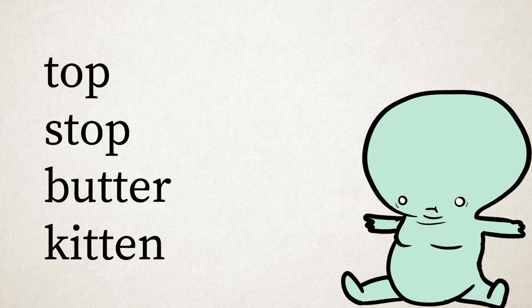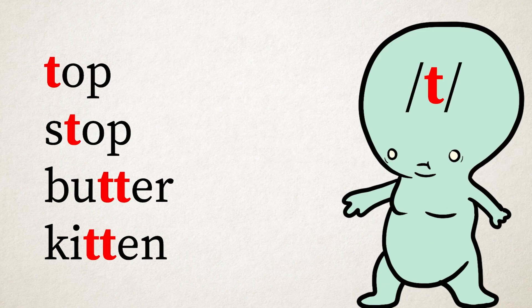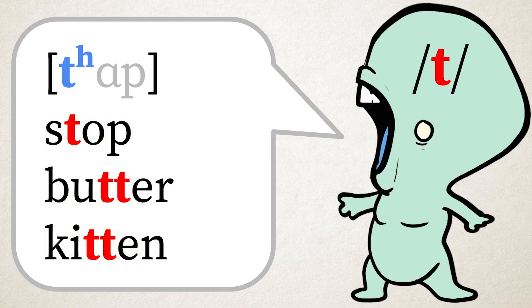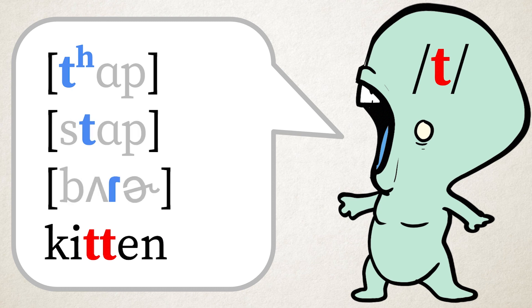It's sort of like T in English. In your brain, all these sounds are T's. But when you speak English, top is aspirated, meaning it has a puff of air at the end. Stop doesn't have that puff of air. Butter has a tap, and kitten has a complete stop of airflow.